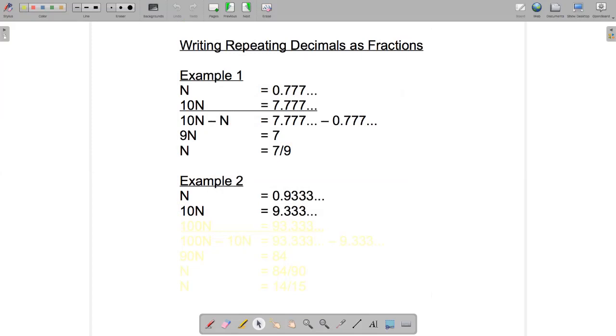Well if I did 10n minus n that wouldn't get rid of all those repeating 3s because I've got this 9 here and I don't have a 9 down here. Okay so I'd get rid of all the repeating 3s right enough but I'd be left with a number that isn't a whole number and that's what I need. I need to get a whole number over on the right hand side.